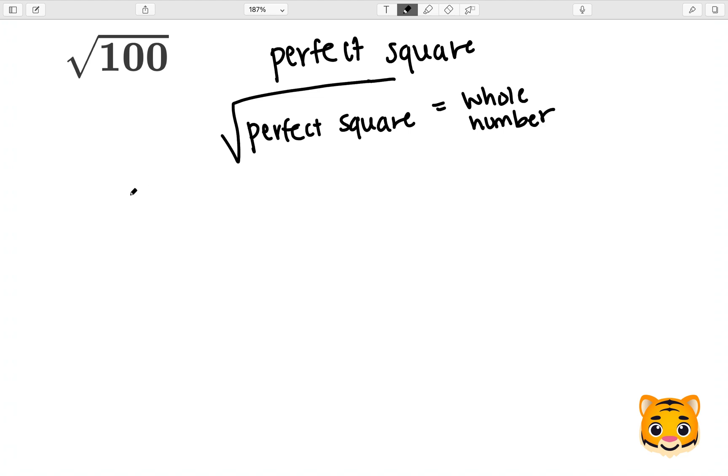Some examples of perfect squares include 1 squared, which gives us 1 as a perfect square, 4 squared, which gives us 16 as a perfect square, 7 squared, which gives us 49 as a perfect square, and 9 squared, which gives us 81 as a perfect square.